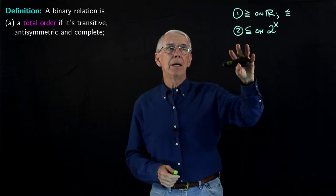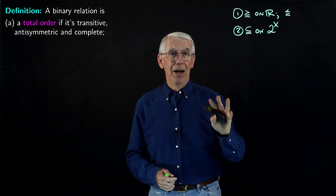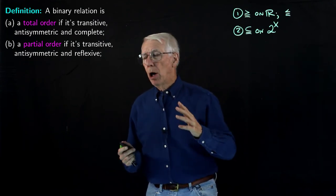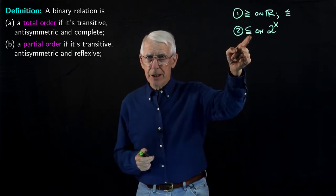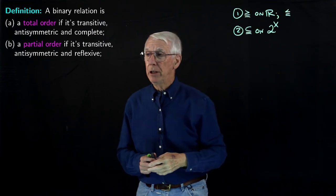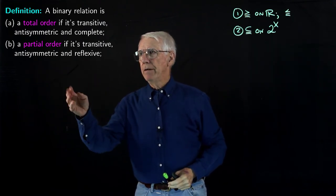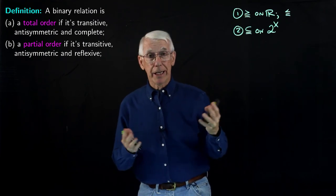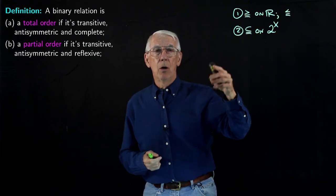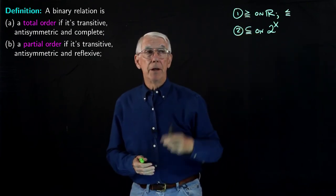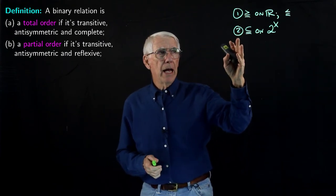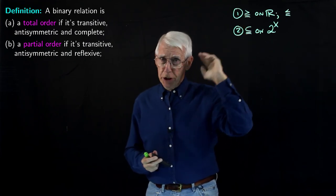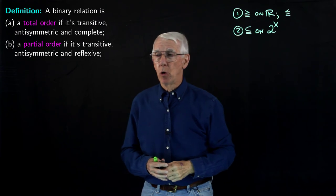This relation and similar relations are important enough that we elevate those properties to a definition — the definition of a partial order. A partial order is one that is transitive and antisymmetric, just like the total order, but not necessarily complete. It could be complete, in which case it would be a total order — a special kind of partial order that is total. The subset relation is transitive, antisymmetric, and reflexive, since any set is a subset of itself.